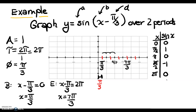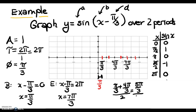How do I find my quarter and three-quarter marks? The middle of pi over 3 and 4 pi over 3 — I take pi over 3 and add 4 pi over 3, getting 5 pi over 3 divided by 2, which is 5 pi over 6. So the quarter mark is 5 pi over 6. For the last quartile, I take 4 pi over 3 plus 7 pi over 3, divide by 2, getting 11 pi over 3 divided by 2, which is 11 pi over 6.